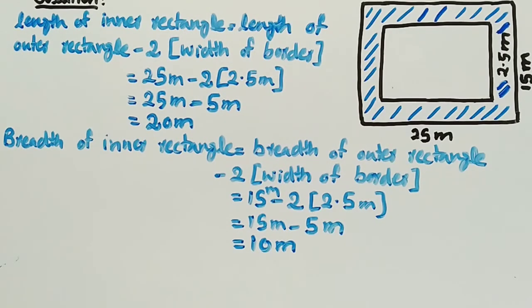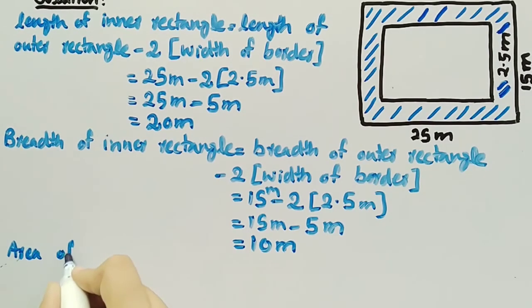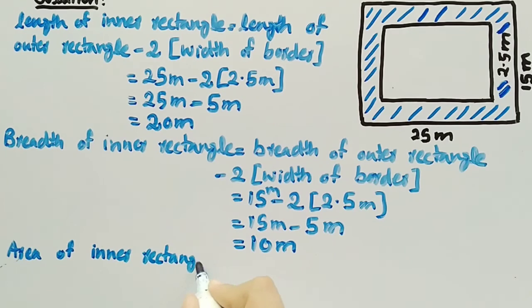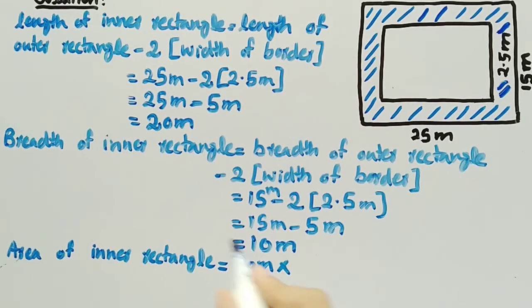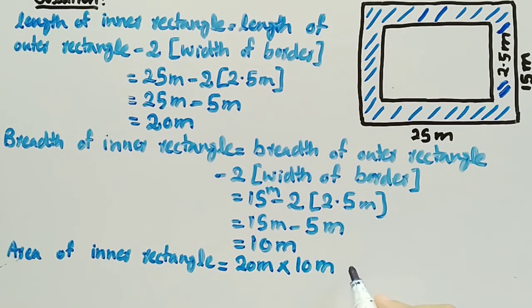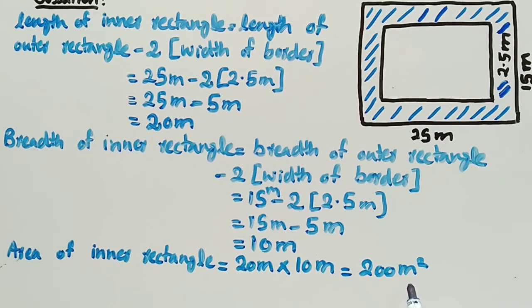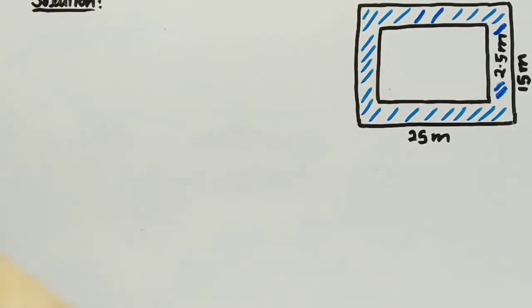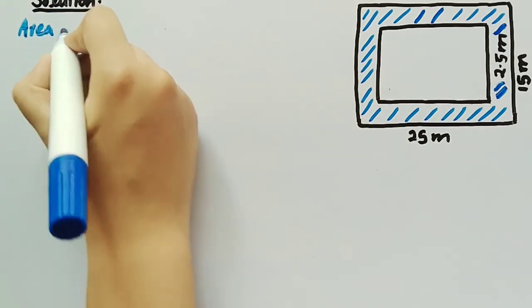Now since we have found the length and breadth of inner rectangle, we can find the area of inner rectangle. It is equal to length of inner rectangle, 20 meters, multiplied by breadth of inner rectangle, 10 meters. Multiplying these two we get 200 meter square, so area of inner rectangle is 200 meter square.